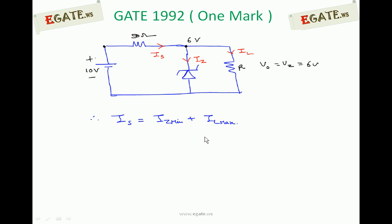Is equals Iz minimum plus Il maximum. We know Is is 80mA, Iz minimum is 5mA, so Il maximum equals 75mA. From this, we can calculate R minimum. R minimum equals V0 divided by Il maximum: 6 volts divided by 75mA, which is 0.08 kilo-ohms, or 80 ohms.